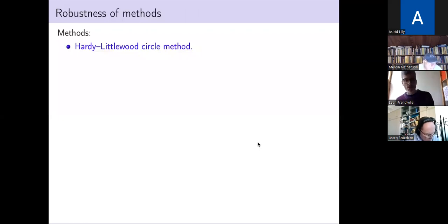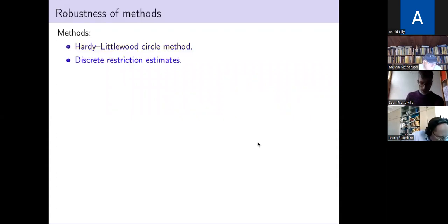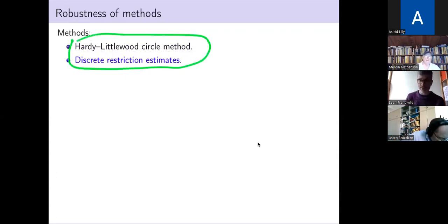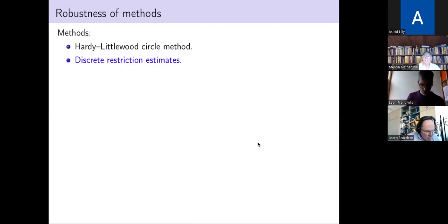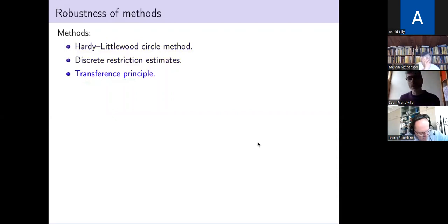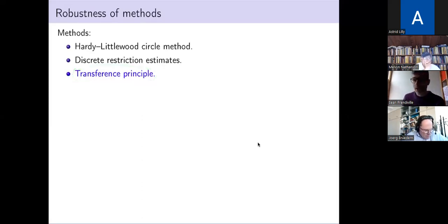What goes into proving these results? I use the Hardy-Littlewood circle method, a cornerstone of analytic number theory, and discrete restriction estimates — which one might view as part of harmonic analysis, though practitioners of the circle method would see these two things as essentially the same. We also use a transference principle from additive combinatorics, which allows you to deduce results about sparse sets of integers from results about dense sets. This goes back to Ben Green's work on Roth's theorem and the primes.